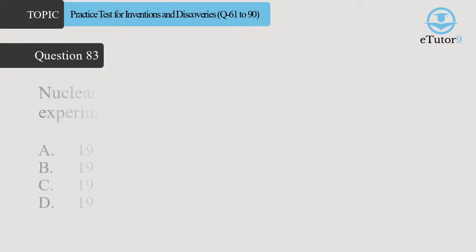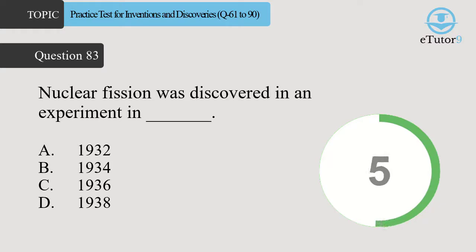Question 83. Nuclear fission was discovered in an experiment in Dash. Answer is D. 1938.